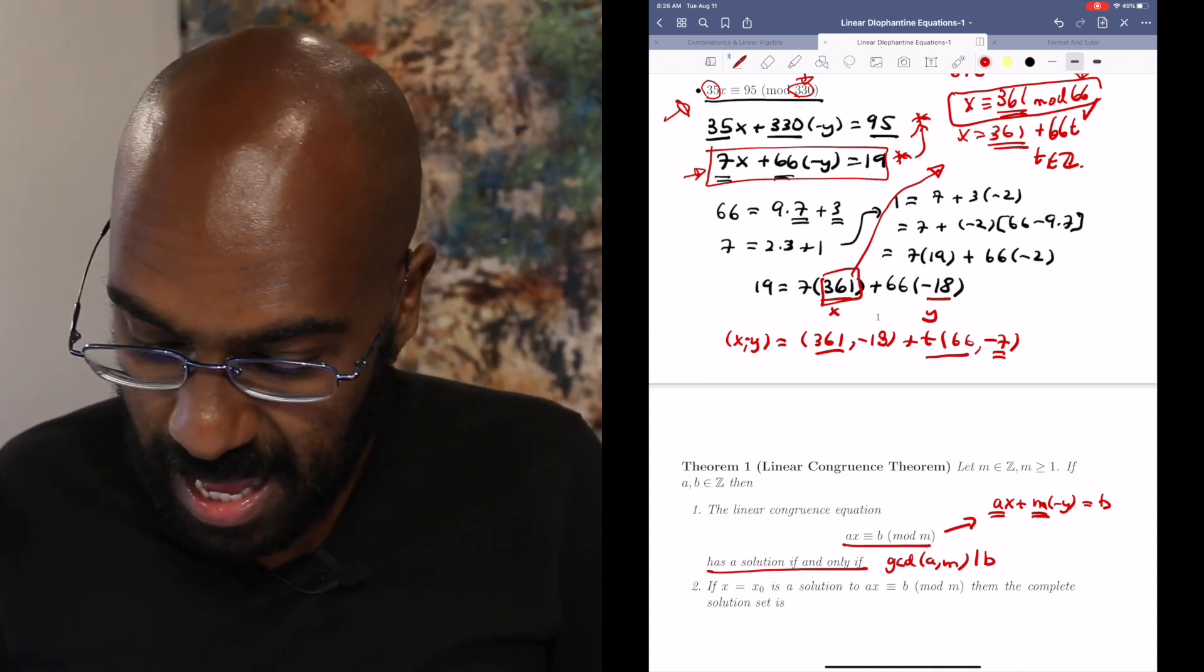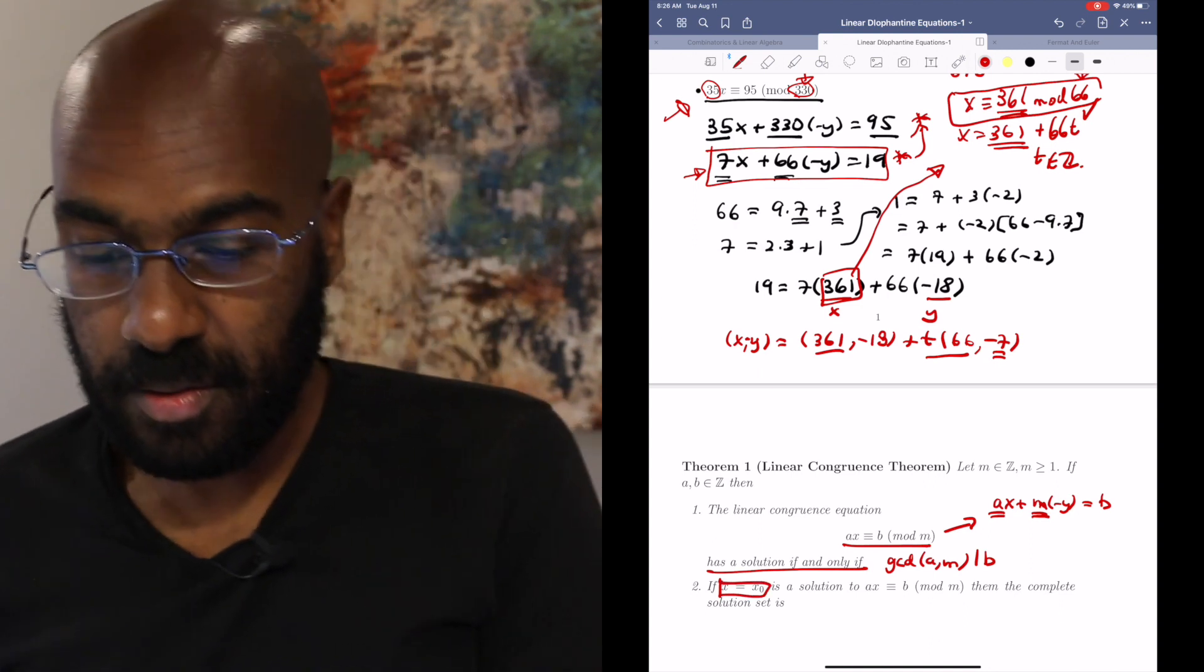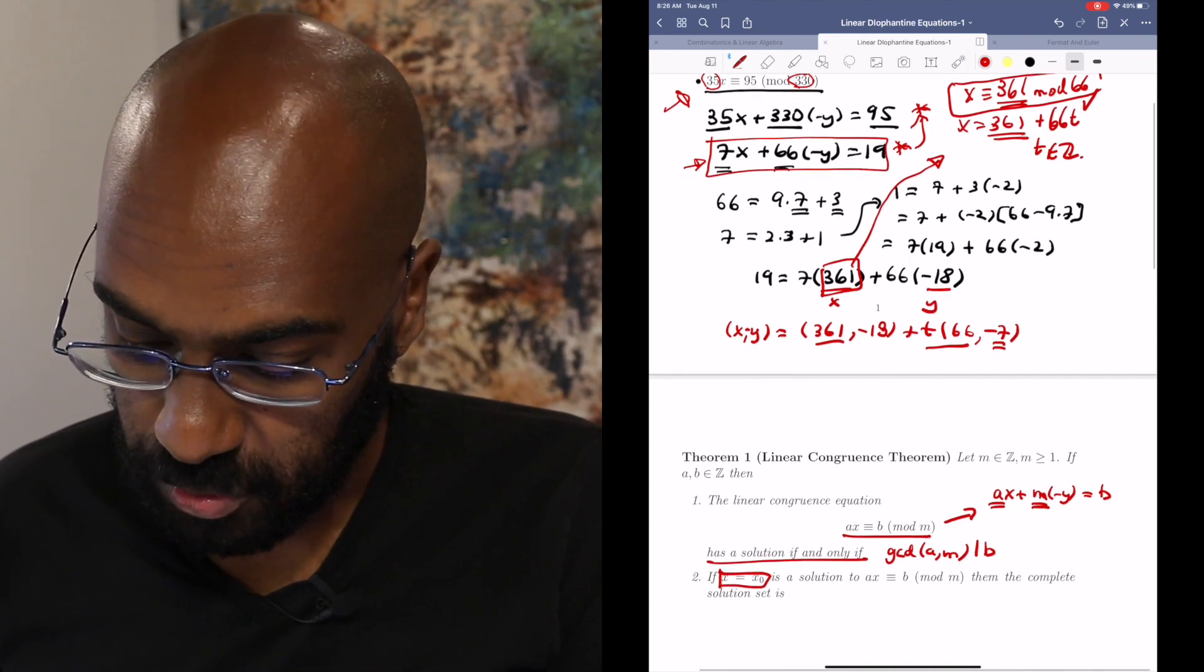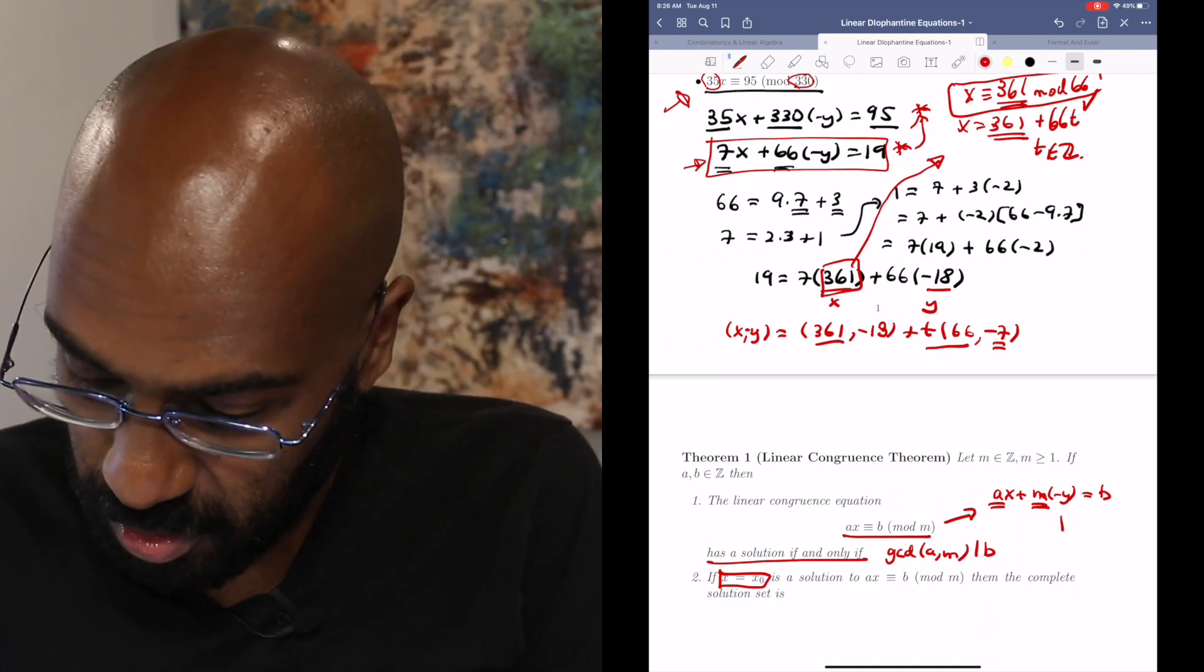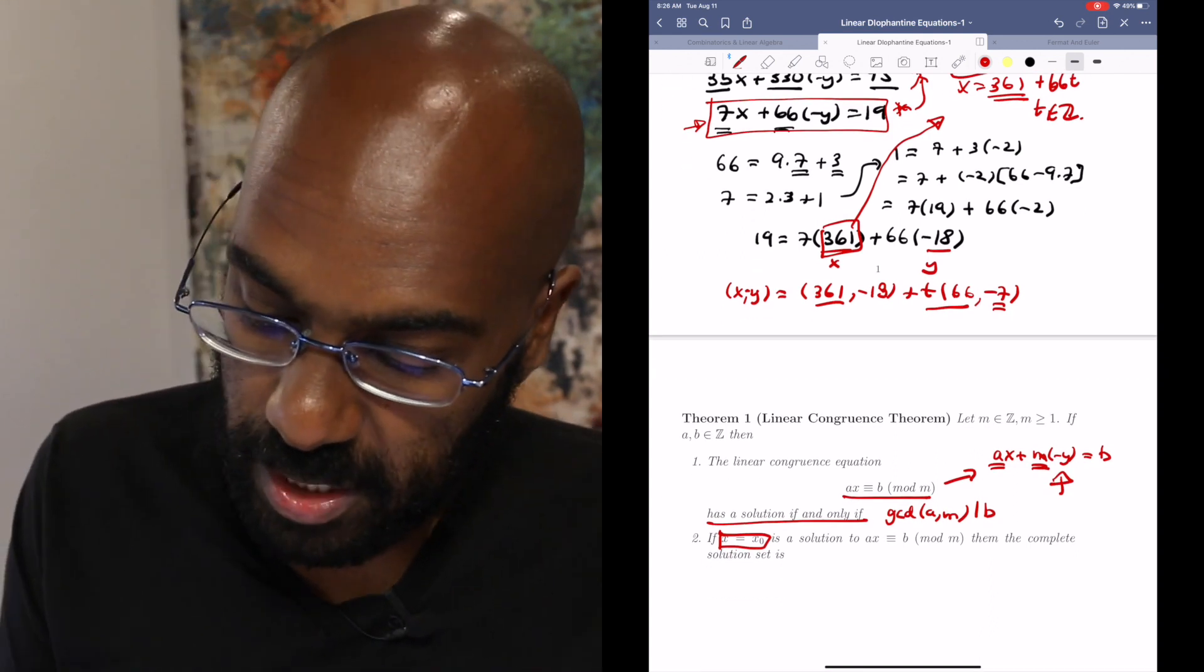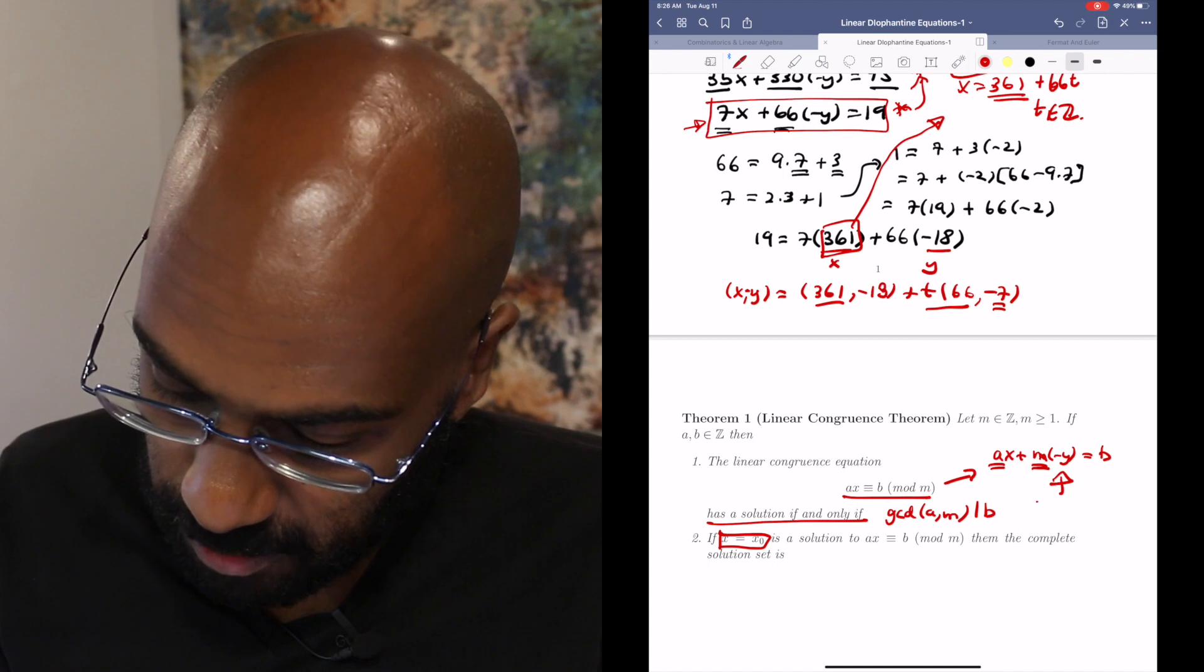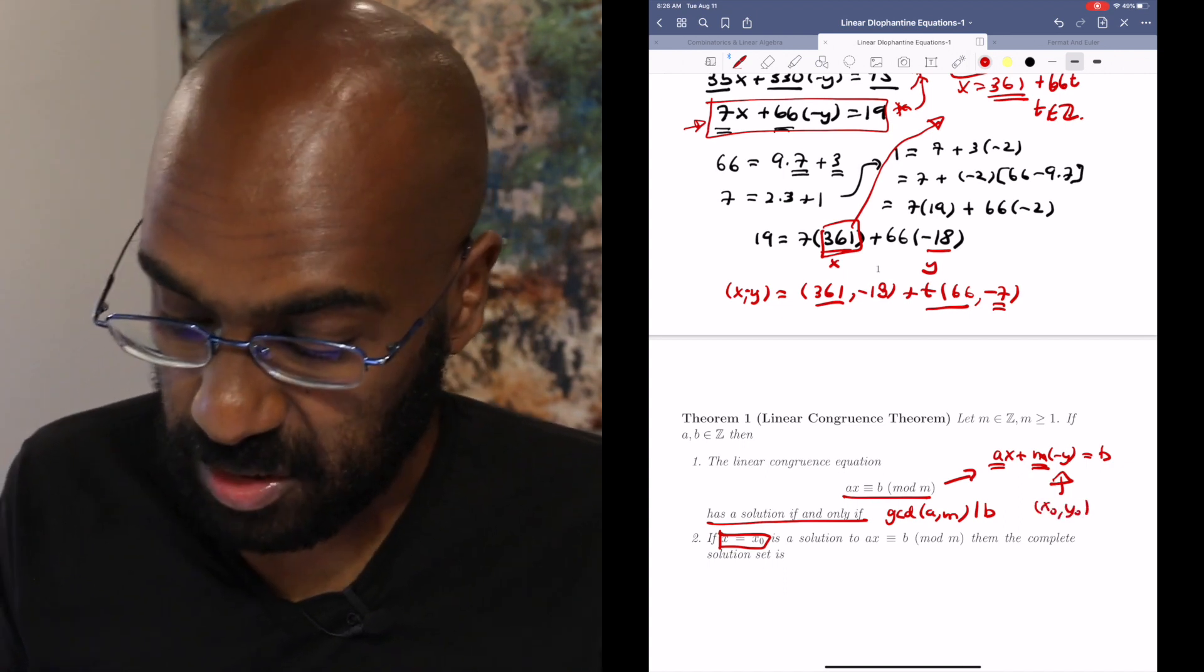And once we have one particular solution in this previous example, a particular solution was 361, then we can actually write down all the solutions again by thinking about what happens with the linear Diophantine equation. So in the linear Diophantine equation, the solution set, again, will look like whatever solution set we start off with, so say x0 and y0,